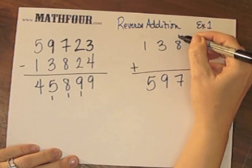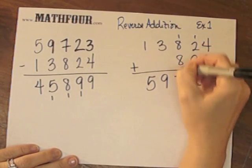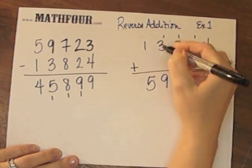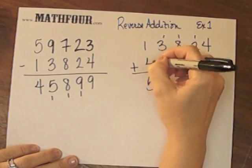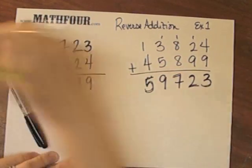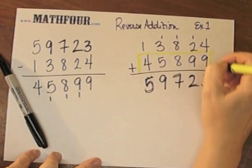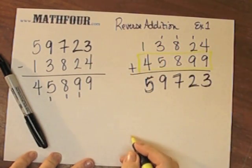8, 9 plus 8, 17, carry the 1. 3, 4 and 5 gives me 9, and 1 and 4 gives me 5. So here we would have the final answer: 45899.